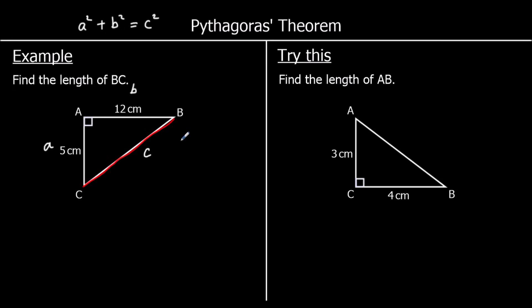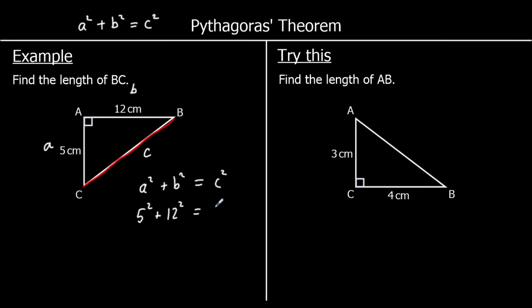So let's look at this example. Find the length of BC. So we're finding the longest side of this triangle. We know that a squared plus b squared equals c squared in any right angled triangle.